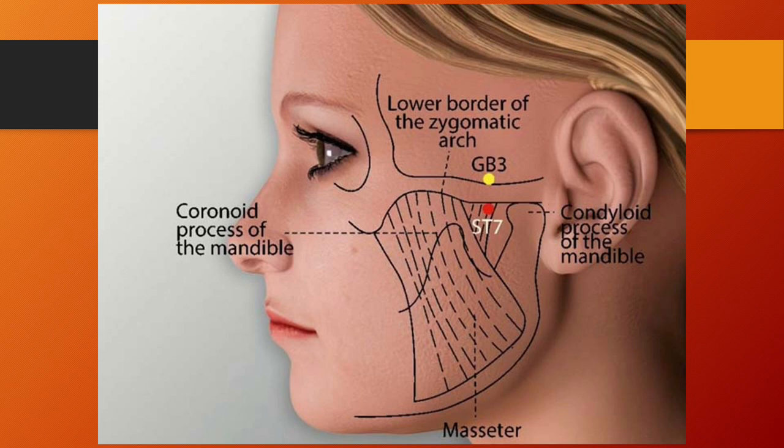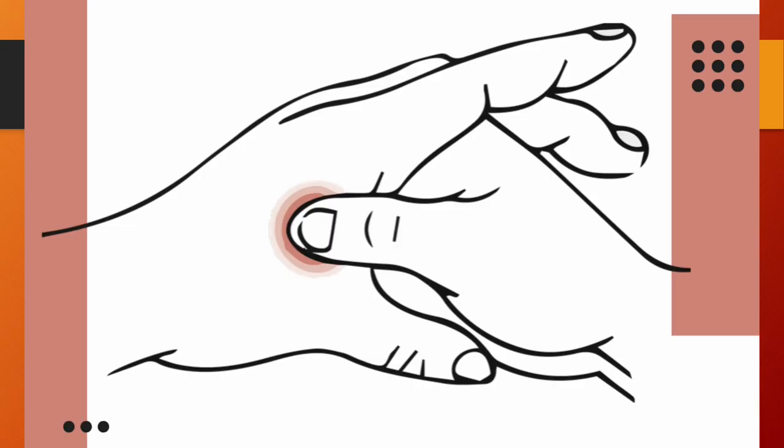Stomach 7, Xiaguan or below the joint, is located on the face, anterior to the ear, in the depression between the zygomatic arch and the condyloid process of the mandible. It is the crossing point of the stomach and gallbladder channels. Functions: clear obstructions in the meridian, benefits the ears, jaw, and teeth. Needling: perpendicular insertion, 0.5 to 1 tsun. LI4, Hegu, is the yuan-source point of the large intestine channel and command point of the head and face.